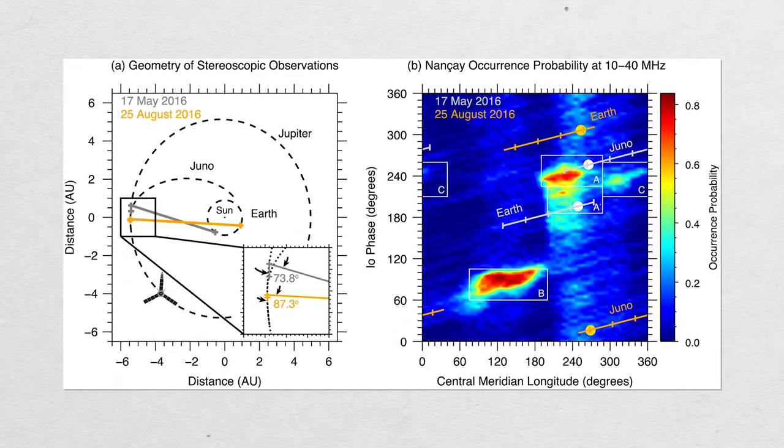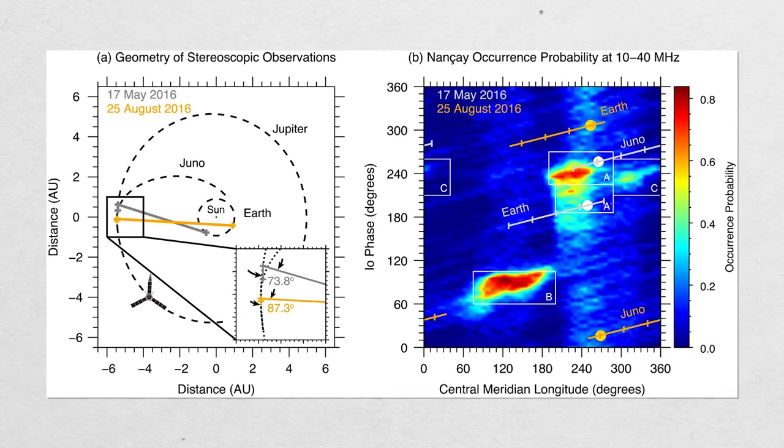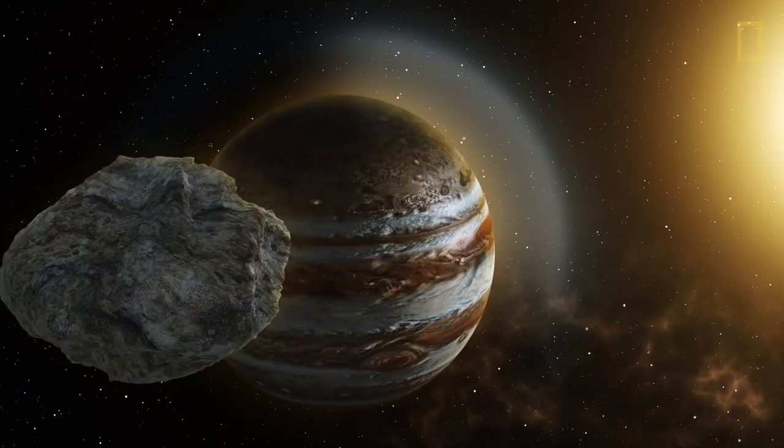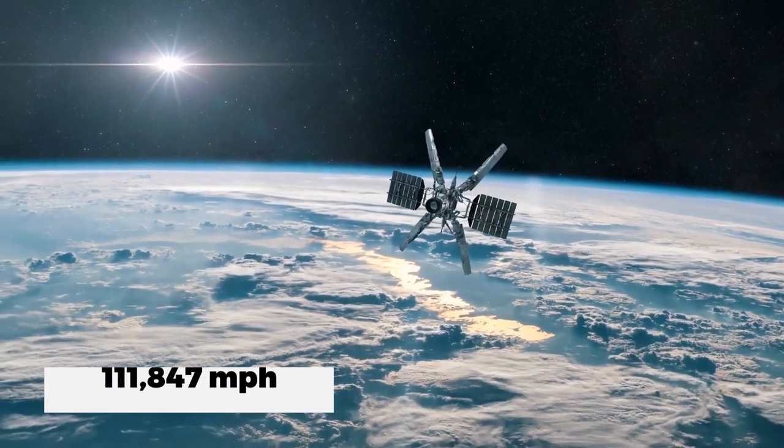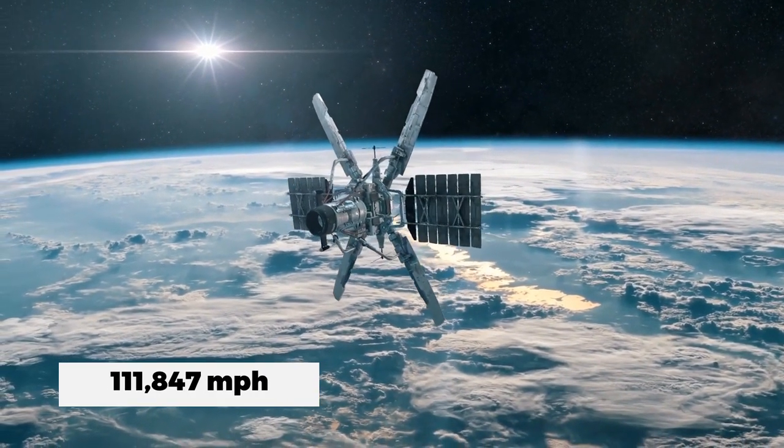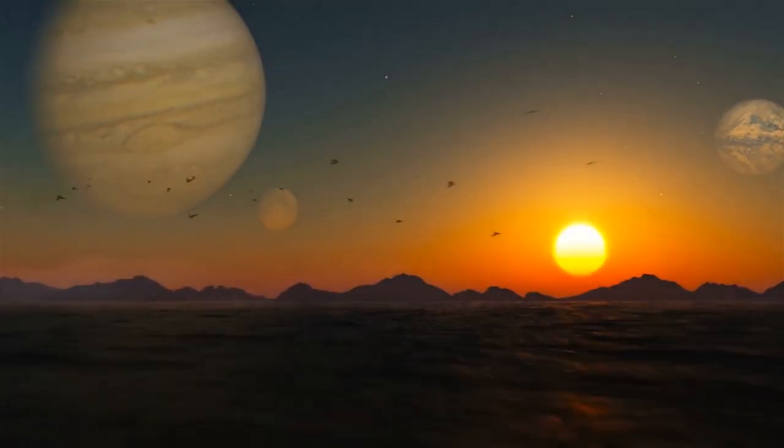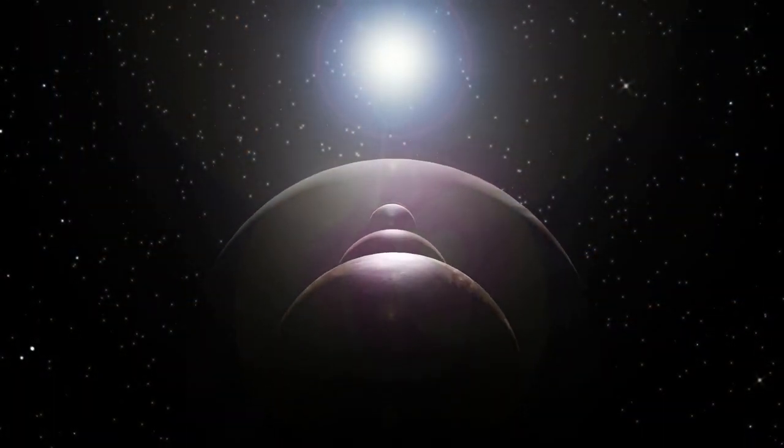When it came across the radio source, also known as a decametric radio emission or simply Wi-Fi, the spacecraft, which was launched in 2011, was moving at a speed of 111,847 miles per hour over Jupiter's polar zone. Although it only observed the radio emission for five seconds, that was sufficient to determine its source.